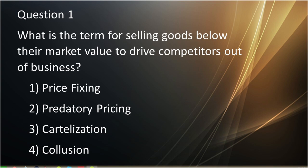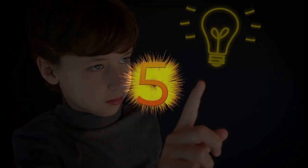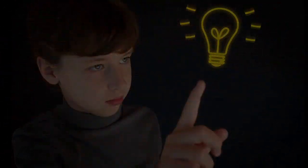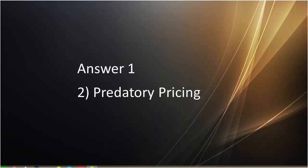Question number one: What is the term for selling goods below their market value to drive competitors out of business? First is price fixing. Second is predatory pricing. Third is cartonization. Fourth is collusion. Answer to question number one is predatory pricing.